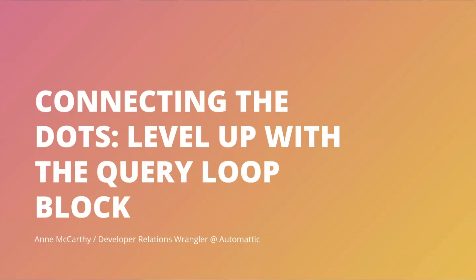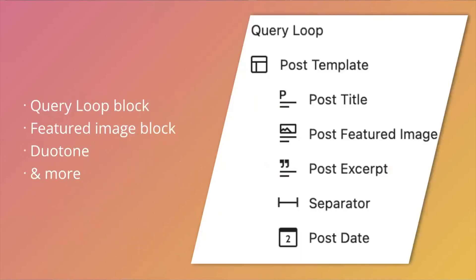The aim is to show you how different features connect to create real-world value. At a high level, this video will touch on the following features: the Query Loop Block, the Featured Image Block, Duotone, and more. By the end of the video, I hope you have some ideas for how you can use a Query Loop Block in particular, and how it might both save you some time and help you level up what you can create.